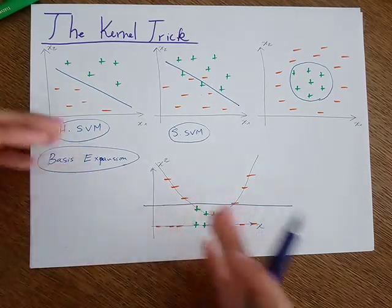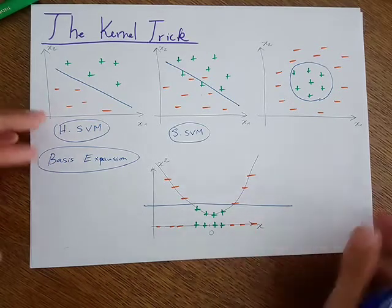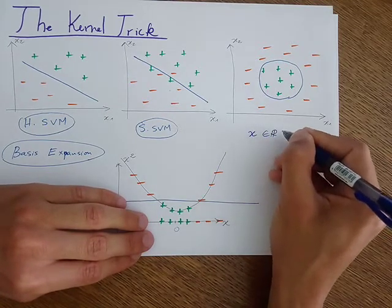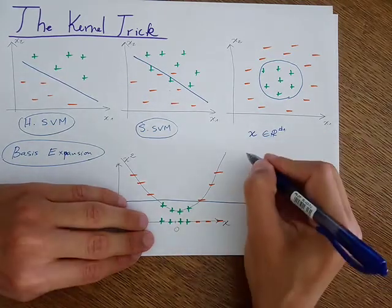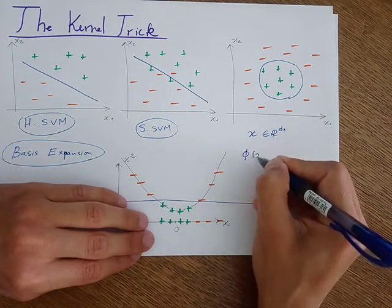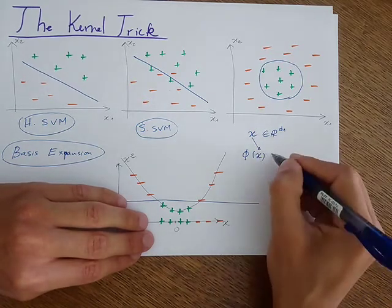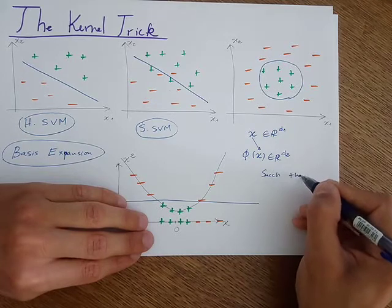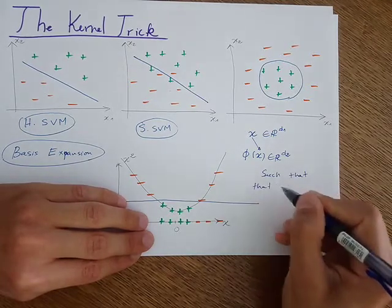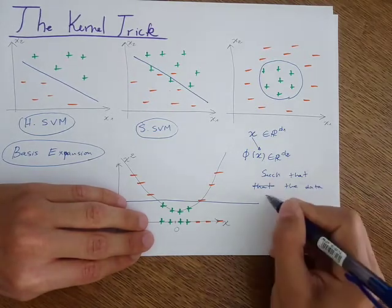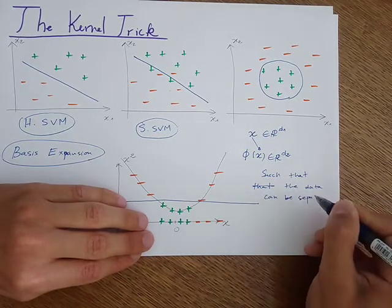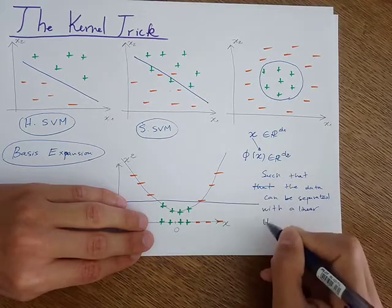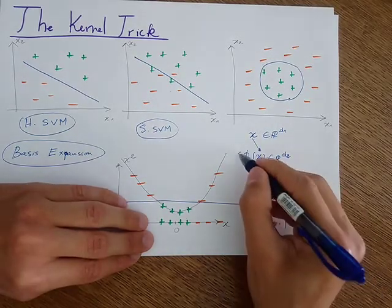We just create a feature such that we expand our feature space. The idea of basis expansion is: we have an original feature space — it can be D1-dimensional — and what we need to do is find some transformation that would map these original features into a new dimension, let's call it D2, such that the data can be separated with a linear hyperplane in that new feature space.